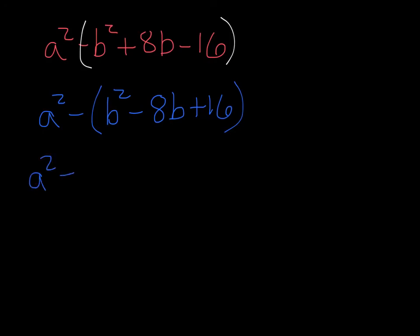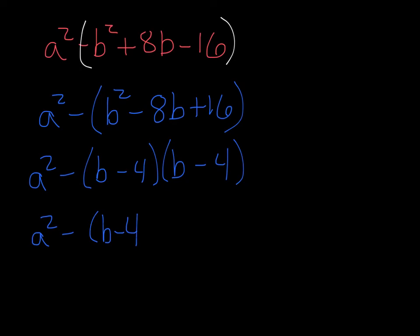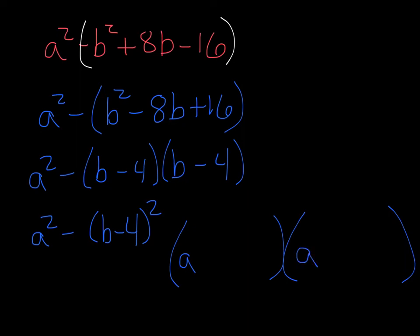Using the a times c method — we're thinking of numbers that multiply to give positive 16 and add to give negative 8, which would be negative 4 and negative 4. We can refoil to check: b times b is b squared, b times negative 4 is negative 4b, minus 4b gives us negative 8b, and negative 4 times negative 4 gives us positive 16 — we're all good. We rewrite this as a squared minus (b minus 4) quantity squared. Now we have a perfect square minus another perfect square — a difference of squares. We take the square root of both: square root of a squared is a, square root of (b minus 4) squared is b minus 4. One gets a plus and one gets a minus.